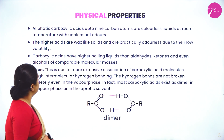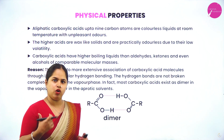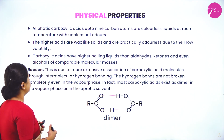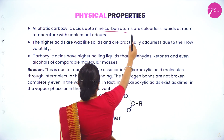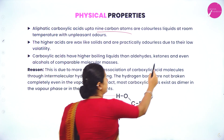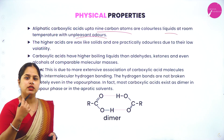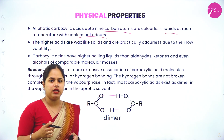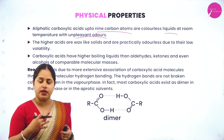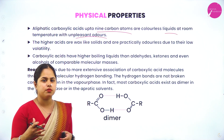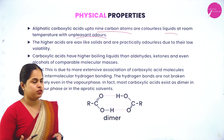Beginning with the physical properties: aliphatic means without ring structure, that is straight chain or branched ones. Aliphatic carboxylic acids up to 9 carbon atoms are colorless liquids at room temperature with unpleasant odors. So C1 to C9 carboxylic acids are generally present as liquids and they have an unpleasant odor.